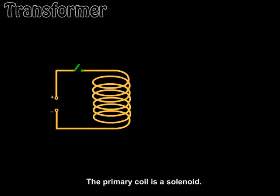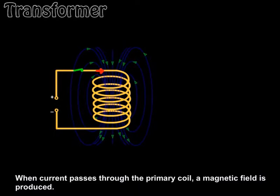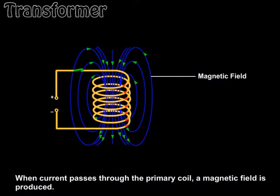The primary coil is the solenoid. When the current passes through the primary coil, a magnetic field is produced.